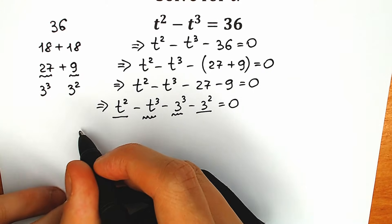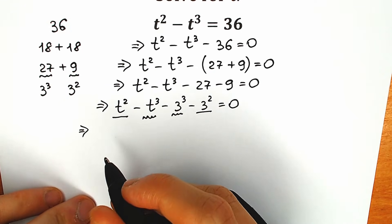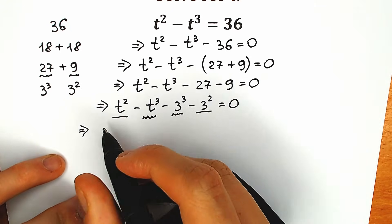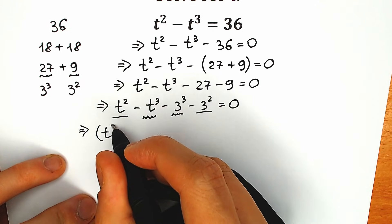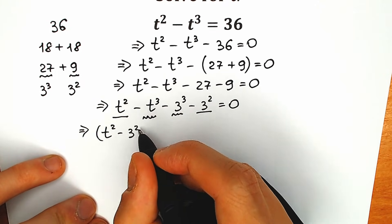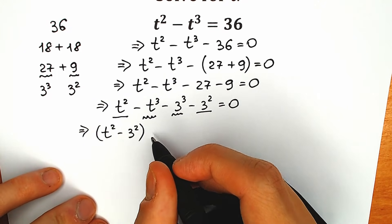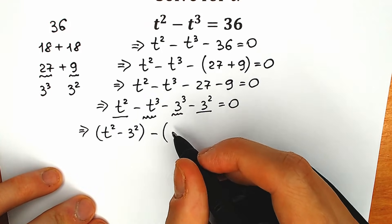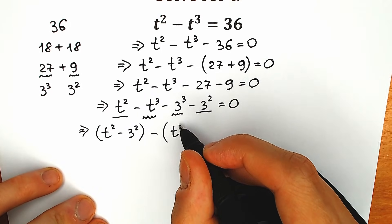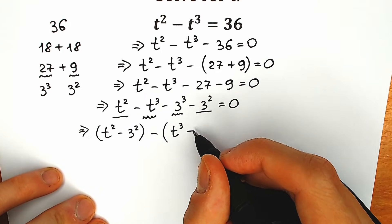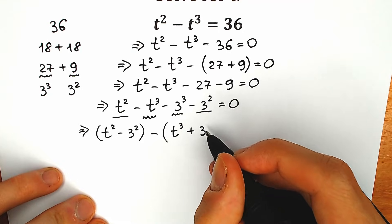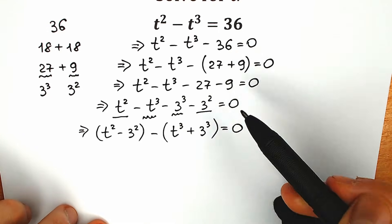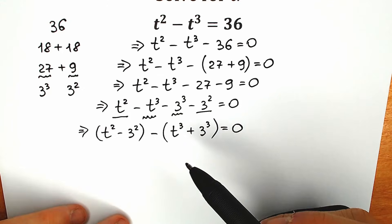Let's start with squares: t squared minus 3 squared — this is our first expression. We have minus, and then t cubed plus 3 cubed — because we have parentheses — equal to zero. I really hope you understand this solution up to this moment.